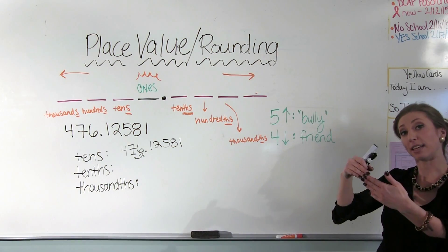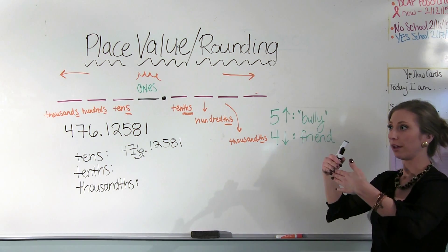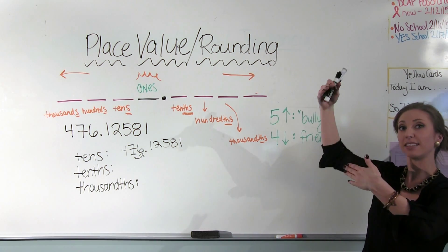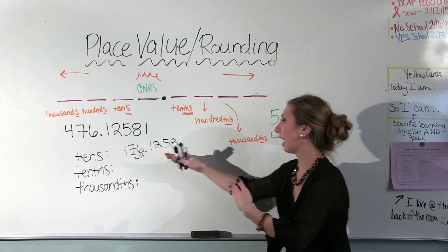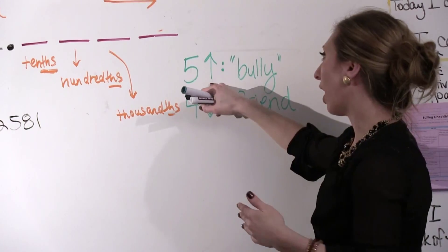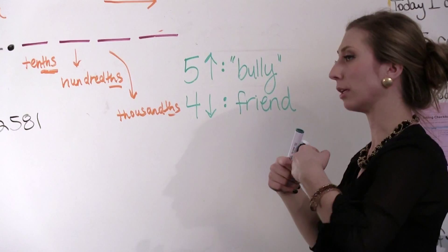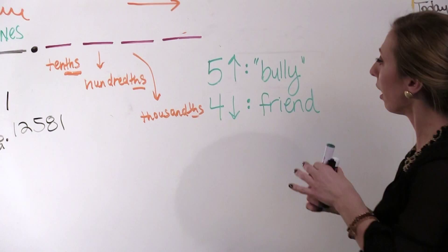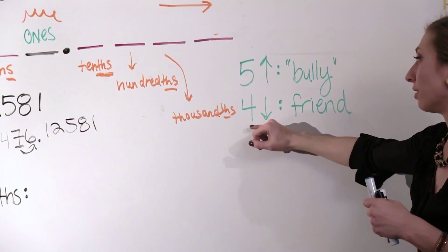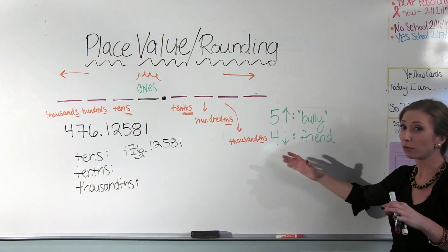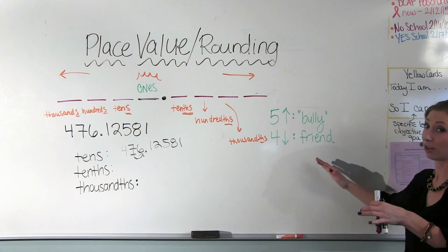This next one is the hundredths place, and as you might notice: tens, hundreds, tenths, hundredths. So once you memorize the left, you know the right. Then we have the thousandths place — T-H-S — and so on.